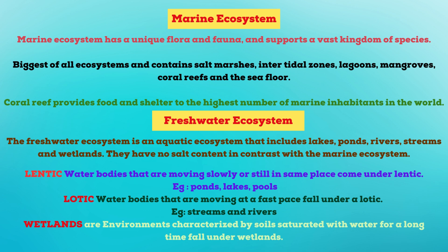Freshwater ecosystem is an aquatic ecosystem that includes lakes, ponds, rivers, streams and wetlands. They have no salt content, in contrast with the marine ecosystem. It is further divided into lentic, lotic and wetlands. Lentic refers to water bodies that are moving slowly or still, such as ponds, lakes and pools. Lotic refers to water bodies moving at a fast pace, such as streams and rivers. Wetlands are environments characterized by soils saturated with water for a long time.